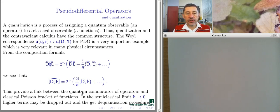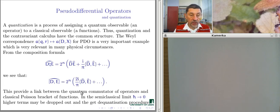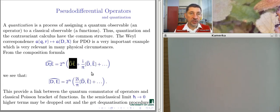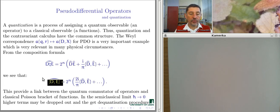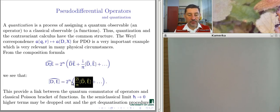The composition formula suggests that if we look for the commutator, we get rid of all even-order elements: the zero-order part disappears, only odd-numbered terms remain, and those terms start from the Poisson bracket of the two functions. That has a clear interpretation in quantum mechanics: the quantum commutator of two pseudo-differential operators, in the first term of its expansion, equals the Poisson bracket, giving a clear correspondence between classical and quantum mechanics.